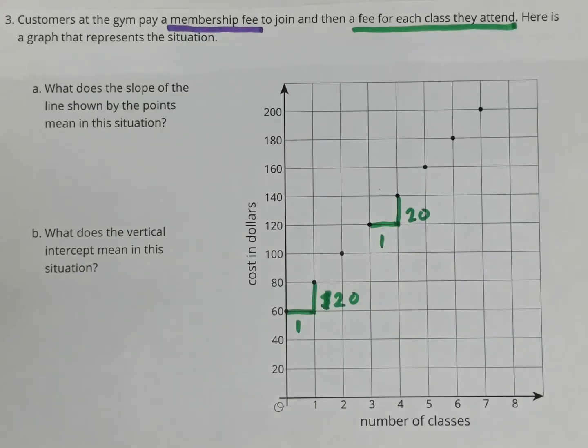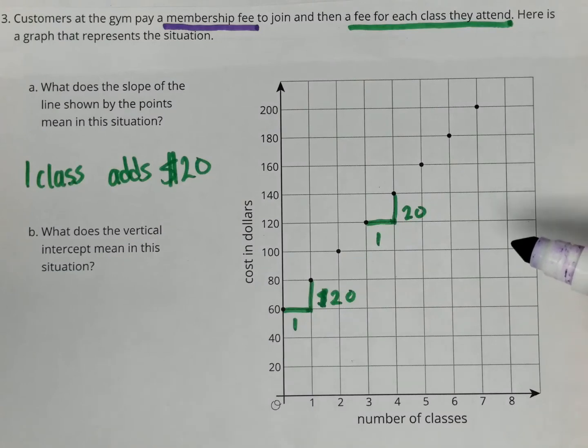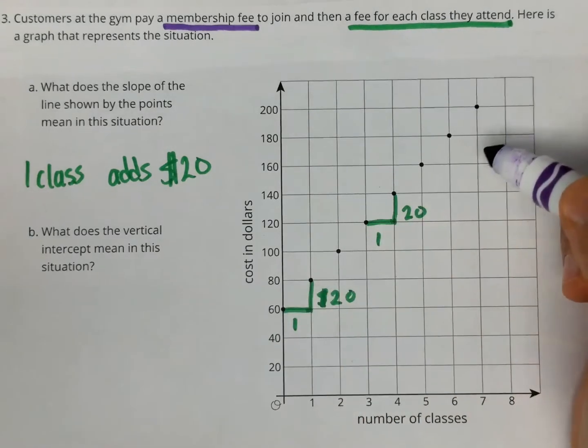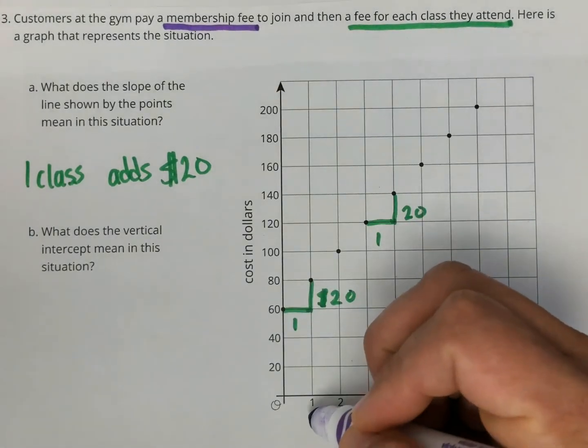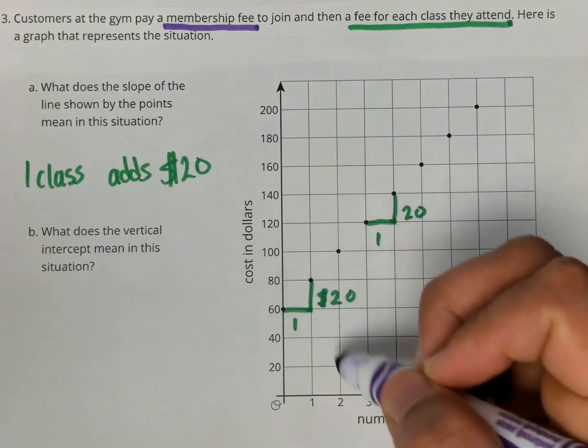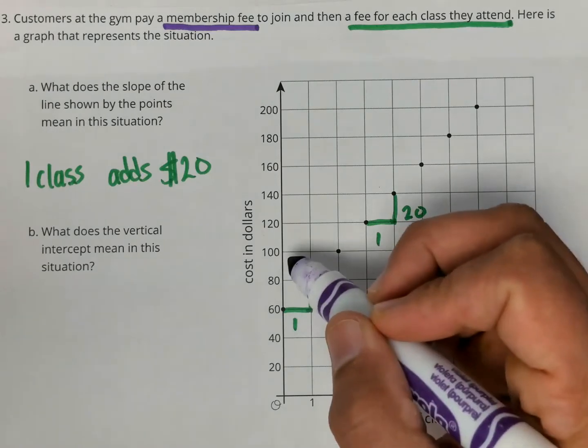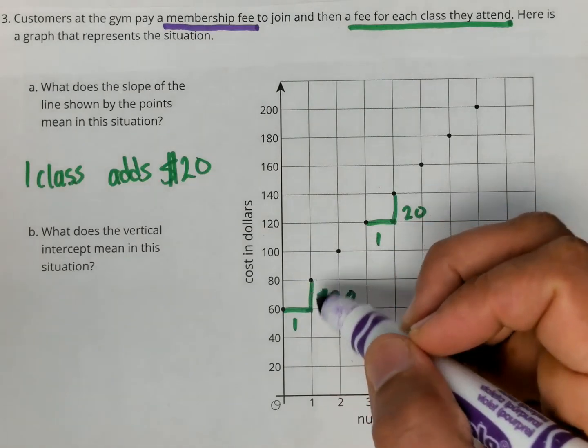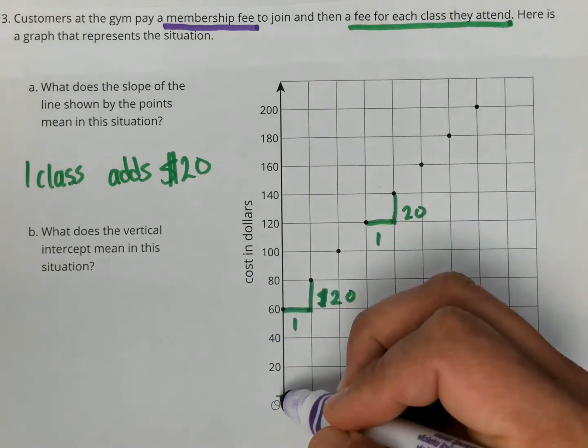Now Part B, let's look at what Part B says. What does the vertical intercept mean in this situation? I want to look at the numbers here. When people take one class, it costs $80. When you take two classes, it costs $100. Now I want you to note, where does this graph start?